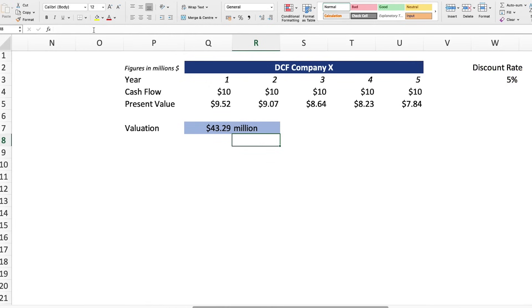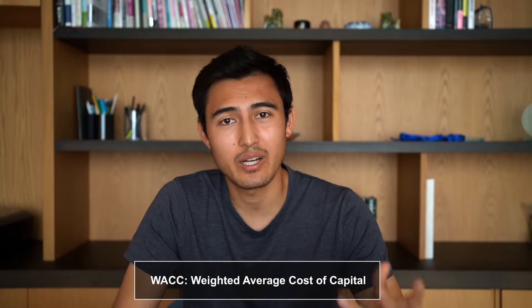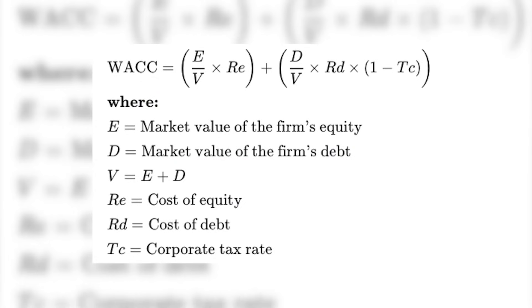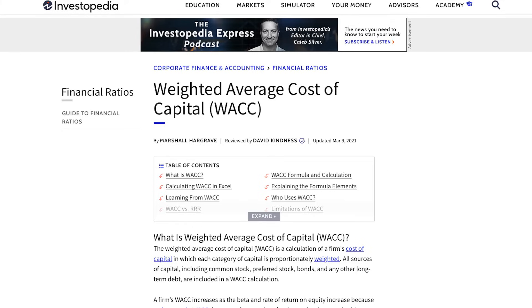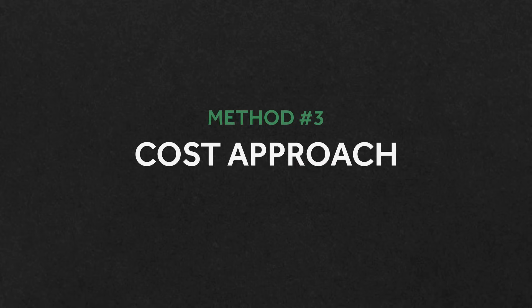Another simplification is the discount rate — in this case I said 5%, but I honestly made that number up. In reality there's a way to calculate it using the WACC, which stands for the weighted average cost of capital. It's a large formula that looks daunting but is actually simpler than it appears. I'll leave an article on this in the description. If you want me to do a full in-depth video on DCF, let me know in the comments.